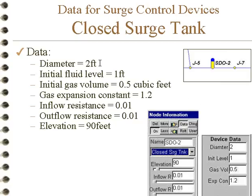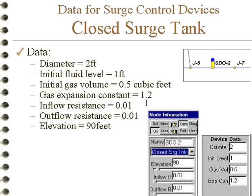There's a diameter or an effective diameter of the tank. If it's not a vertical tank, you should take the total volume and the total draft — up and down, vertical draft — and convert it to an equivalent diameter. This is how high the fluid is initially; this is the volume of gas. The gas constant will vary between 1 and 1.4. If you're not sure what it is, it's 1 for isothermal, 1.4 for adiabatic, and 1.2 is a good number to start with.